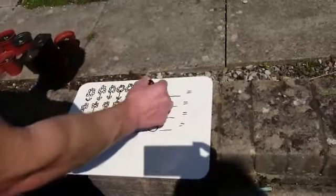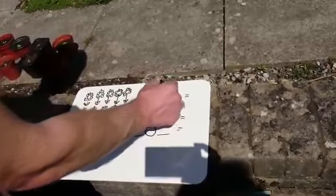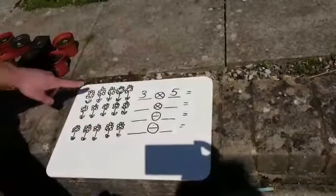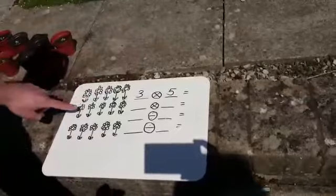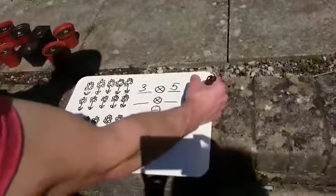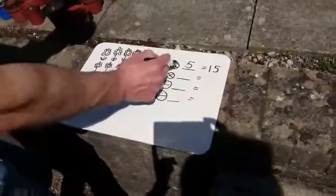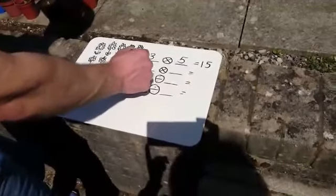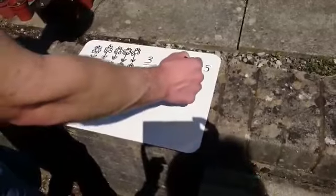So we've got 3 times 5. OK. Now then, if I go 5, 10, 15. If I count up in my 5s, I can make 15. So I can switch this around. I can go 5 times 3 equals 15.